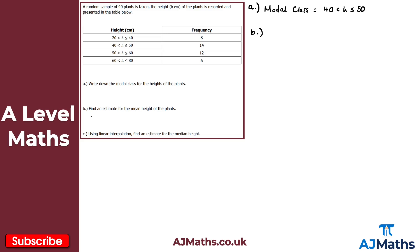For part B, find an estimate for the mean height of the plants, x-bar. First we need the midpoints for each class interval: 20 to 40 has midpoint 30; 40 to 50 has midpoint 45; 50 to 60 has midpoint 55; and 60 to 80 has midpoint 70. Then multiply each midpoint by its respective frequency: 30×8, 45×14, 55×12, and 70×6.